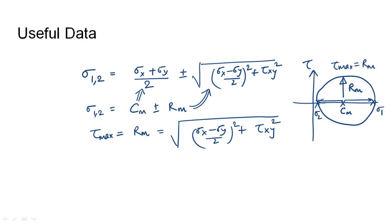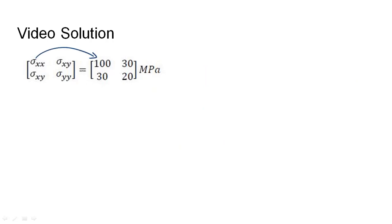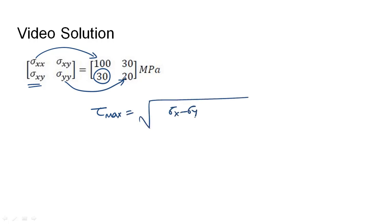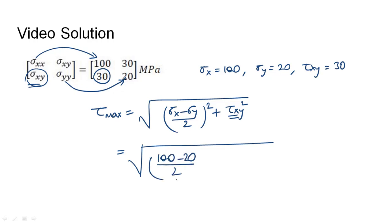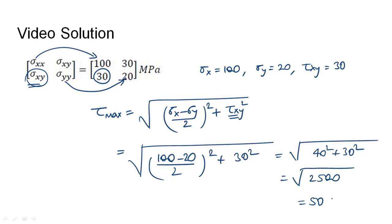In this case, sigma x is given as 100, sigma y is given as 20, and the shear stress tau_xy is 30. So the maximum shear stress equals the square root of ((sigma x minus sigma y)/2)² plus tau_xy². Substituting: sqrt((100 - 20)/2)² + 30²) = sqrt(40² + 30²) = sqrt(2500) = 50 mega Pascal.